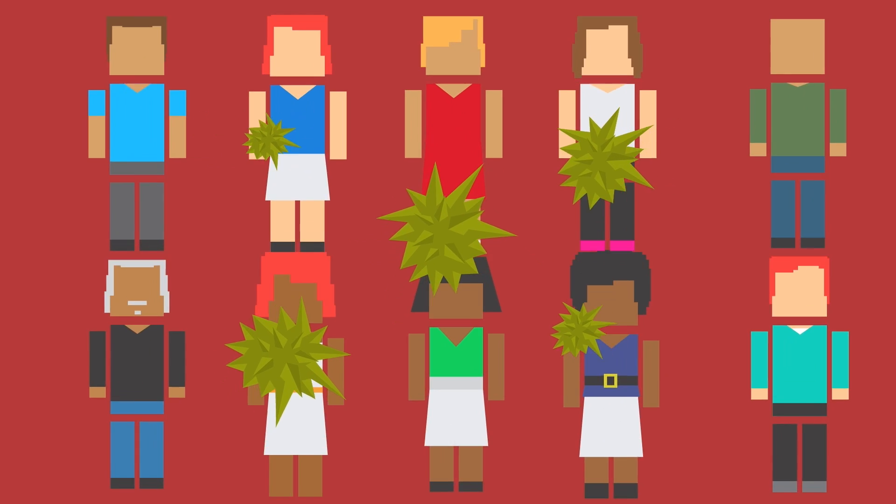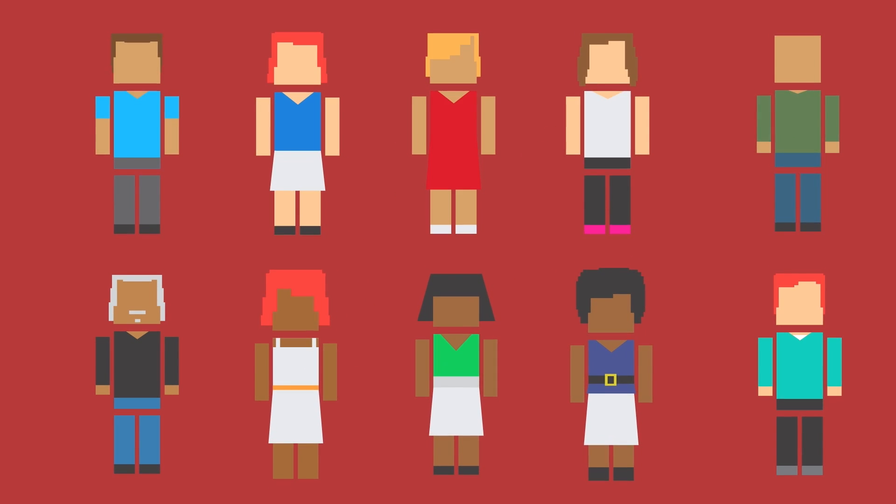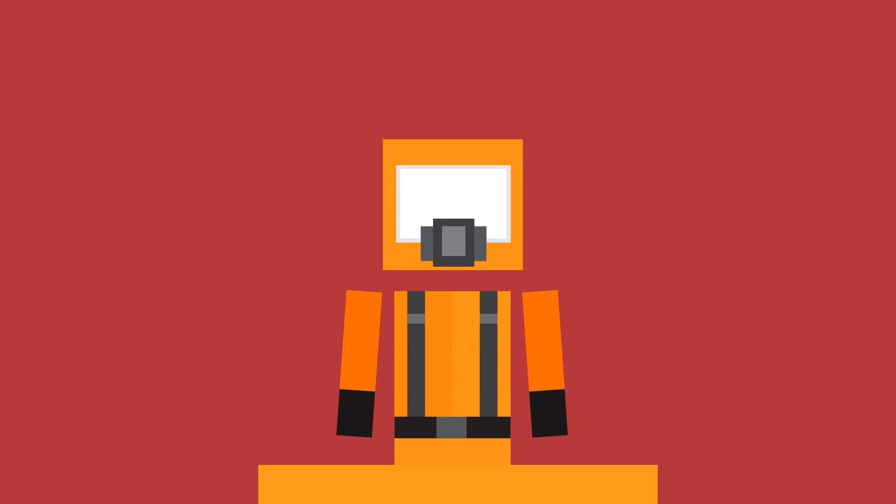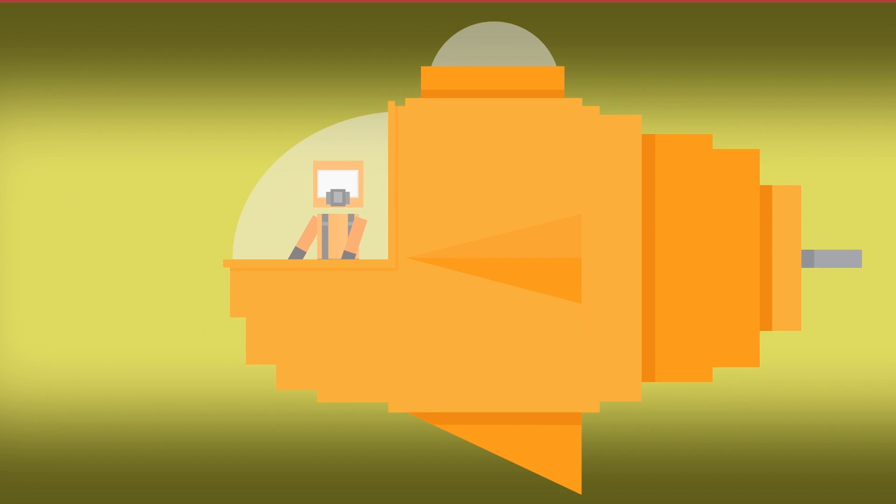kidney stones are actually pretty common, occurring in one out of every ten people. What exactly are they, you ask, concerned viewer? They're solid masses made out of chemicals in your urine. Yep, they form when there's too much waste products and not enough liquid.